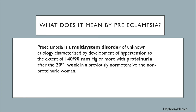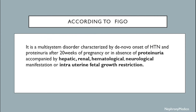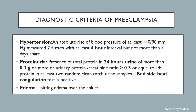After the 20th week in a previously non-hypertensive and non-proteinuric woman. According to FIGO, it is a multisystem disorder characterized by de novo onset of hypertension and proteinuria after 20 weeks of pregnancy, or in the absence of proteinuria, accompanied by hepatic, renal, hematological, neurological manifestations, or intrauterine fetal growth restriction.